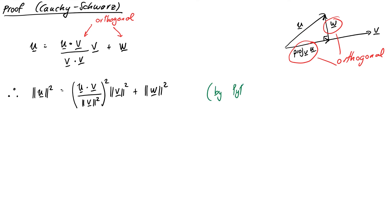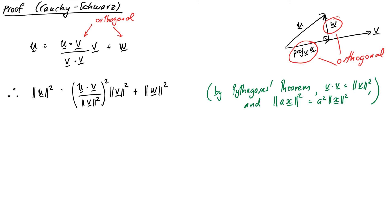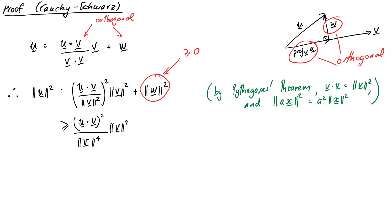That first term looked scary, but it's not really — I've just replaced v dot v with ‖v‖² and used the fact that ‖ax‖² = a²‖x‖² for any vector. Now, ‖w‖² is greater than or equal to zero, so if we remove it, it makes the overall expression a bit smaller. So we can write that ‖u‖² is therefore greater than or equal to (u·v / ‖v‖²)² times ‖v‖², giving us an inequality.